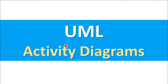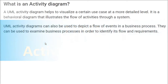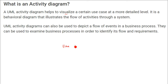We are discussing UML — Unified Modeling Language — activity diagrams. This activity diagram is more than a flowchart, so if you know how to make a flowchart, activity diagrams will be quite easier for you. This UML activity diagram helps us to visualize certain use cases and go into more detail. It is basically a behavioral diagram, showing the flow of activities throughout the system.